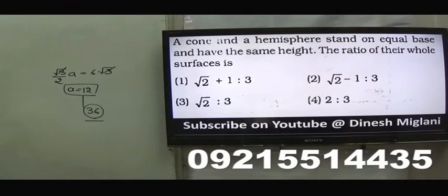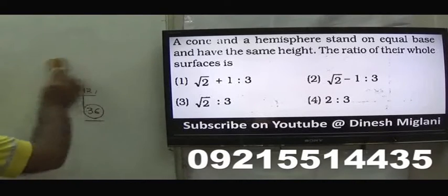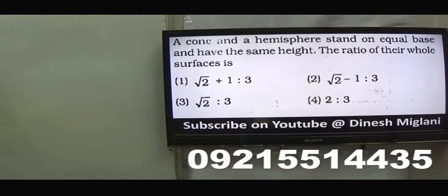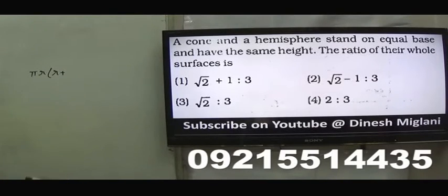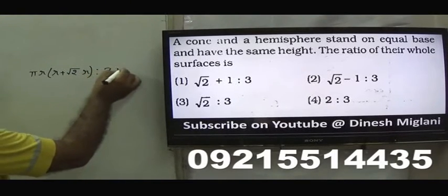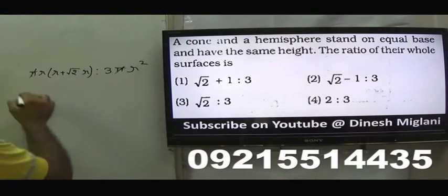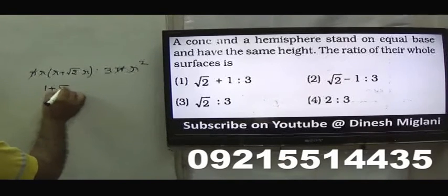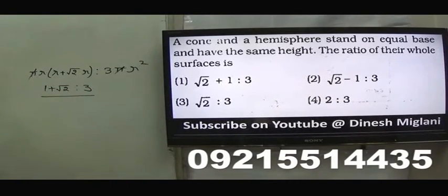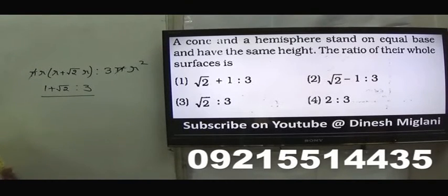Eighteenth question: a cone and a hemisphere stand on equal bases and have the same height. Find the ratio of their whole surface areas. Since the hemisphere's height equals its radius, the cone also has h=r, so slant height L=r√2. Cone TSA = πR(R+L) = πR²(1+√2). Hemisphere TSA = 3πR². Cancelling πR², ratio = (1+√2):3.